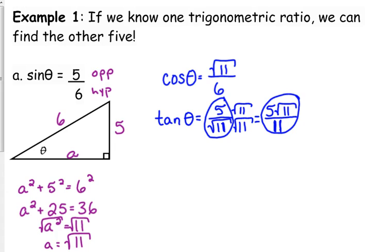Let's do the reciprocals. Cosecant is the reciprocal of sine, so I can take sine's ratio and just flip it over, so the ratio for cosecant is six over five. The ratio for secant is the reciprocal of cosine, so that's six over the square root of 11.